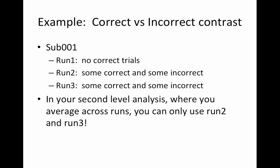For example, let's assume our contrast of interest was correct versus incorrect trials. For subject one: run one has no correct trials, run two has some correct and some incorrect, and run three also has some correct and some incorrect. In your second-level analysis where you average across runs, you can only use runs two and three for your correct versus incorrect contrast. This is assuming correct minus incorrect was estimated in the level one analysis — I'm talking about bringing that contrast to a second-level analysis, in which case you can only use runs two and three.